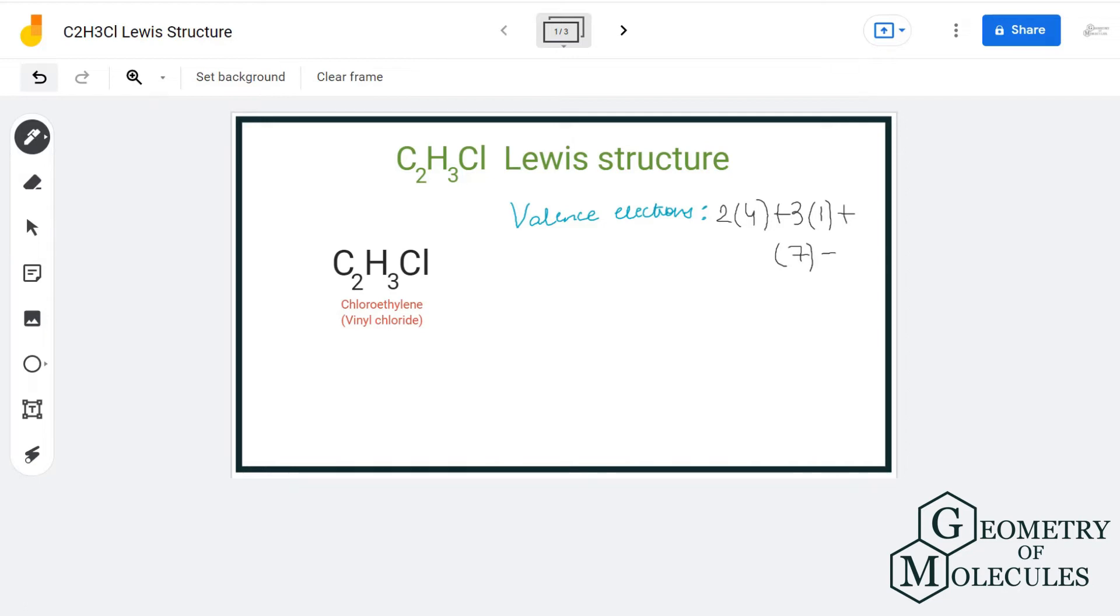So in total we have 18 valence electrons, and the arrangement of atoms will look something like this. Place carbon atoms next to each other, two hydrogen atoms on the top of this carbon atom, one hydrogen atom on the top of this carbon atom, and one chlorine atom beside this carbon atom.